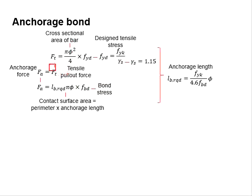Next, we determine the tensile pullout force of the steel bar. It is considered equivalent to the capacity of the steel bar, which is calculated by multiplying the effective cross-sectional area and the design tensile stress.